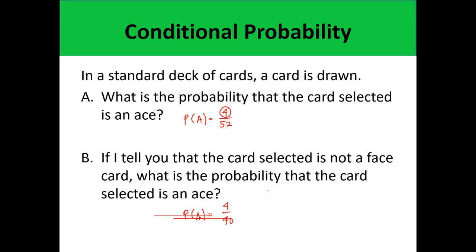In this second illustration, we actually applied conditional probability. When we apply conditional probability, we need to reduce the outcomes of the sample space because we already know some events that have already happened. In this case, we were told the card selected is not a face card — that's the condition. We already know that event will not happen, which is why the probability is 4 over 40 instead of 4 over 52.